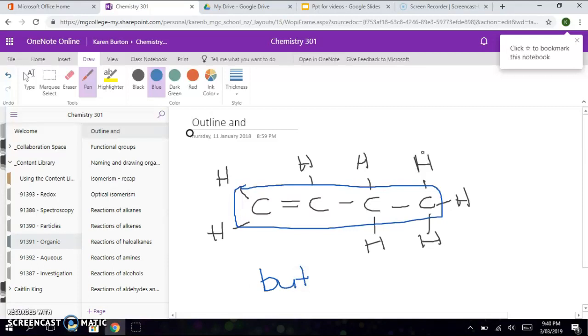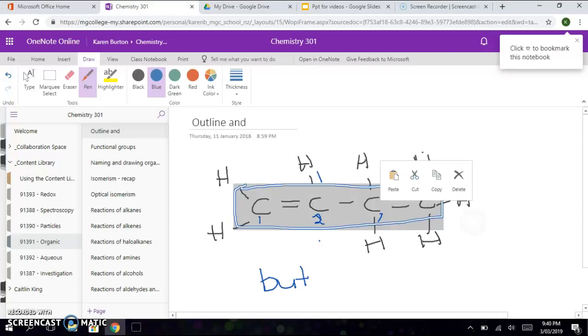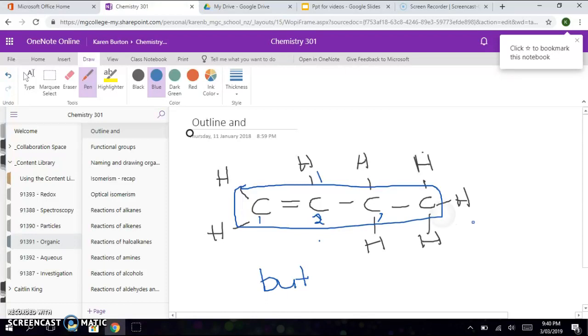Now if I number this carbon chain, one, two, three, and four, the double bond is between carbons one and two, so we're going to name it but-1-ene. 'Ene' because it's got a double bond, '1' because the double bond is between carbons one and two.